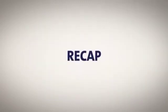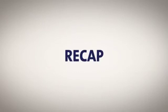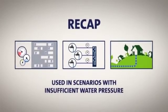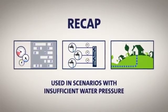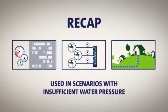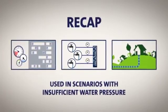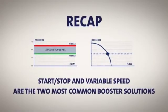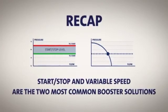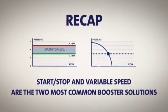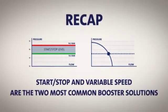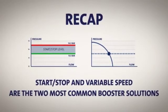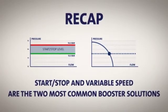So, having looked at the basics of pressure boosting and the most common solutions, let's recap. Pressure boosting is applied where the pressure from the public water supply is not enough to provide an entire building with sufficient pressure. The two most common booster solutions are start-stop and variable speed, both of which will enable you to provide your customers with comfort in the shape of sufficient pressure in taps, showers and appliances.